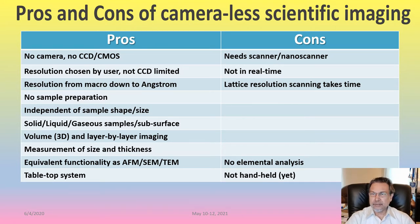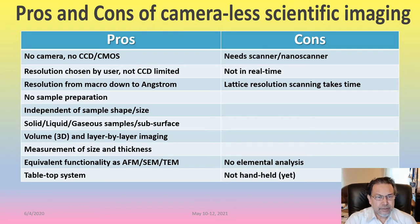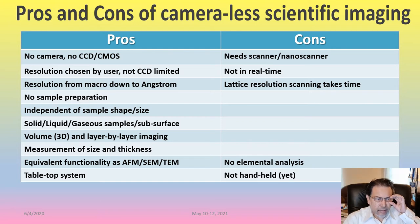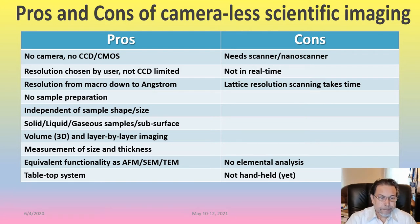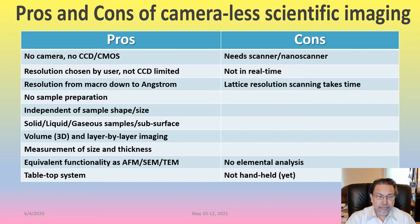The advantages of camera-less scientific imaging are: it does not require a camera, no CCD, no CMOS; resolution can be chosen by the user, not limited by the camera itself; and resolution can range from macro scale down to angstrom. Using T-ray means no sample preparation like in electron microscopy, and it is independent of sample size and shape — samples can be solid, liquid, or gaseous — with subsurface layer-by-layer volume imaging. It can measure size, thickness, and has equivalent functionality to FMA, CMT, and EM. Any tabletop system can be installed in a clean room or in-line inspection situation.